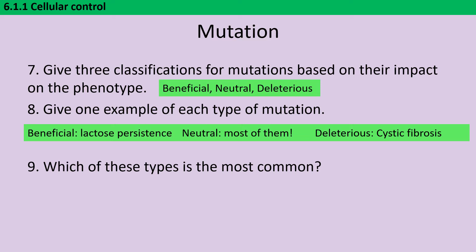Neutral mutations are most of them because most mutations are going to be silent. For deleterious ones, you could go for literally any genetic disease — cystic fibrosis is the most obvious one because it was named for you at GCSE.